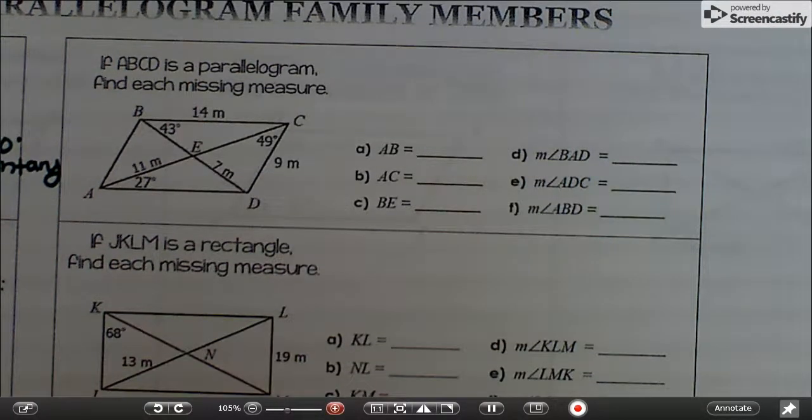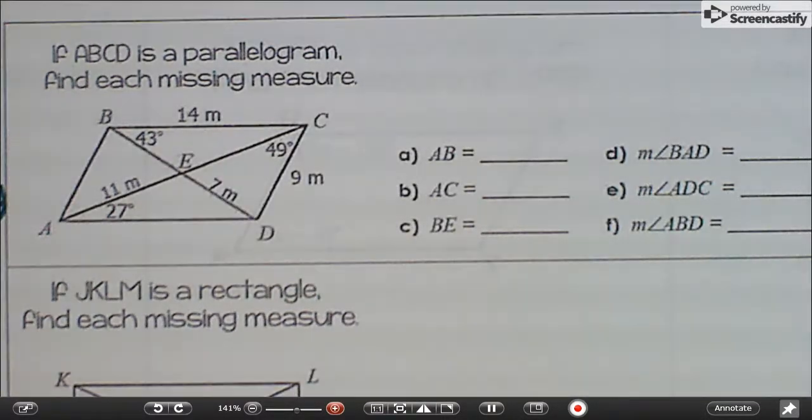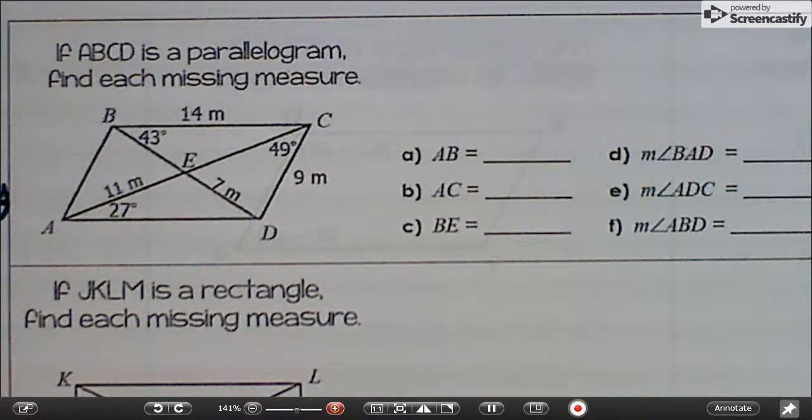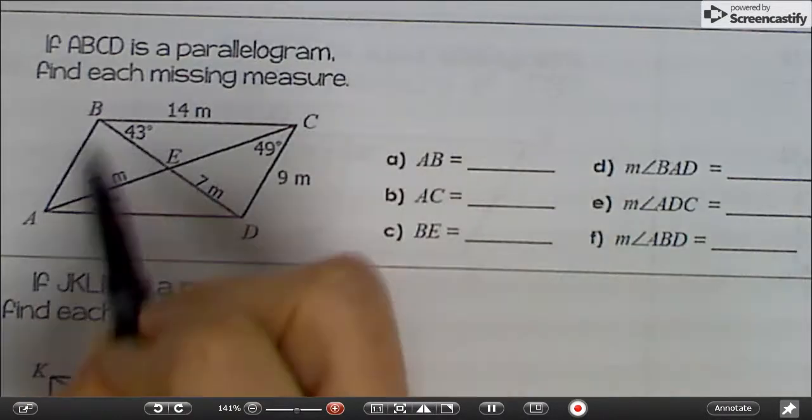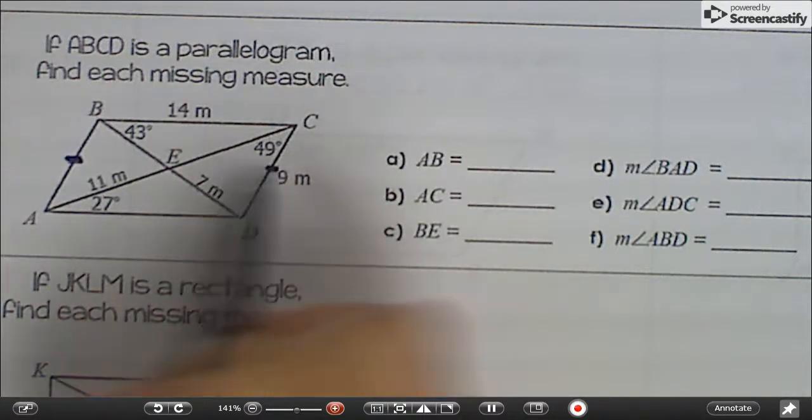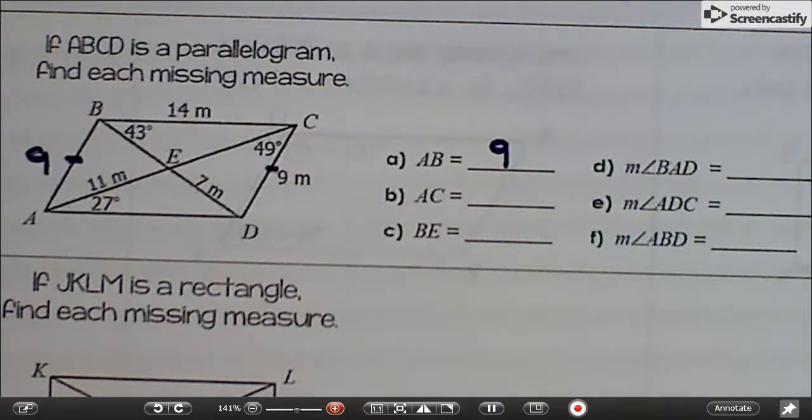All right, so ABCD is a parallelogram. If they don't tell you that, you can't keep going. We're going to find the missing measurements. AB, which is over here, would be congruent to the one opposite it, because in a parallelogram opposite sides are congruent.